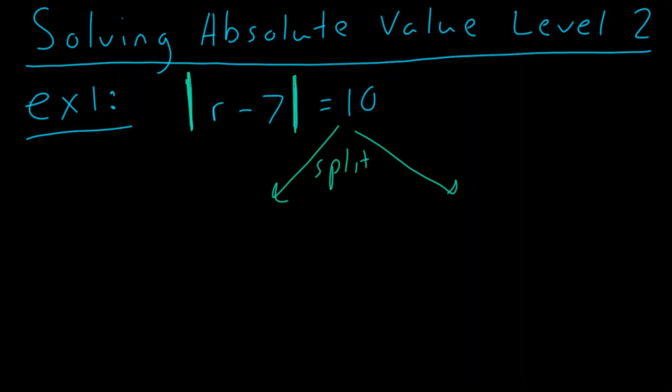I'm going to write the word split. And basically what I'm going to do is say, we have this r minus 7. Oh, I'm sorry. There are no absolute values. So basically what we're going to say is when we have the absolute value bars by themselves, we split this into saying r minus 7 equals positive 10, and r minus 7 equals negative 10.